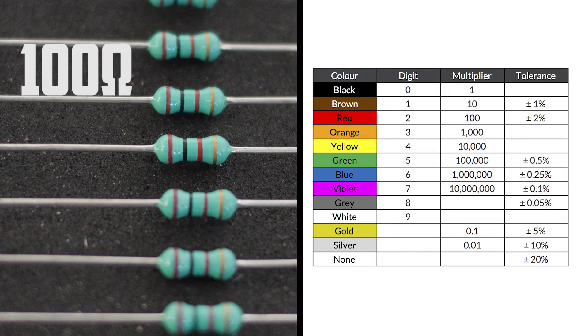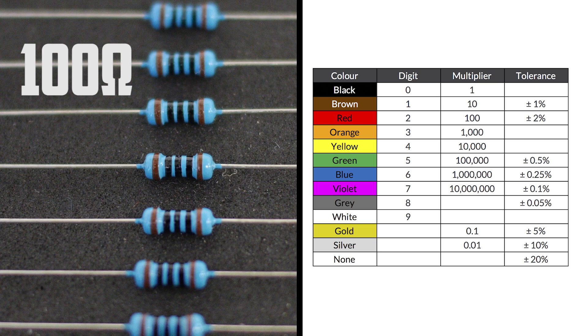Let's look at some 4 and 5 band resistors and figure out their values. Here are 100 ohm resistors. The 4 band is brown, black, brown. The 5 band is brown, black, black, black.